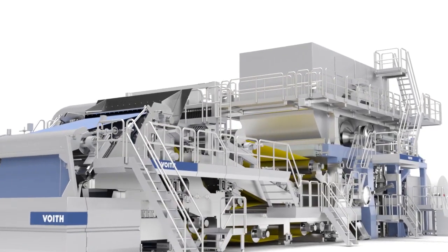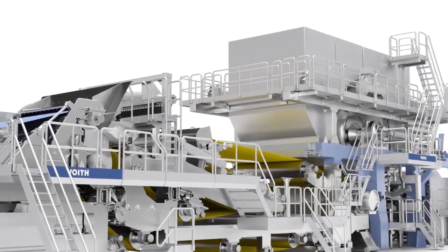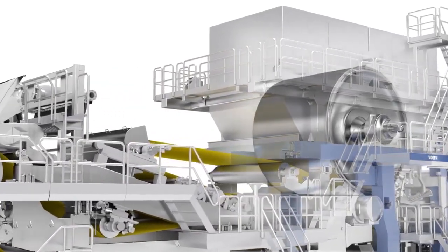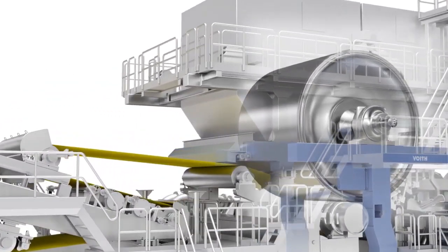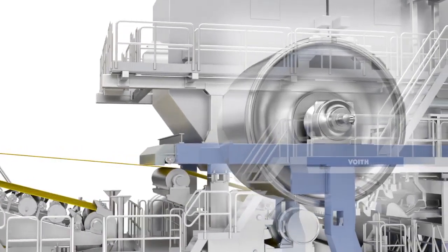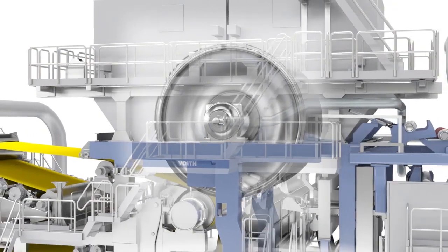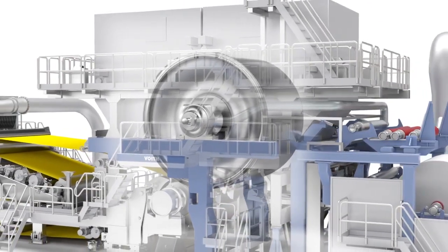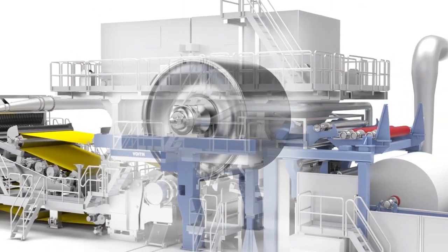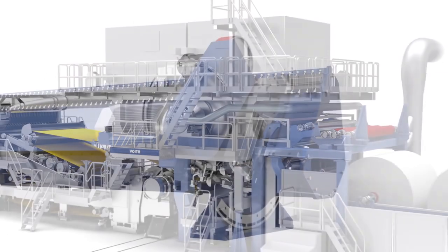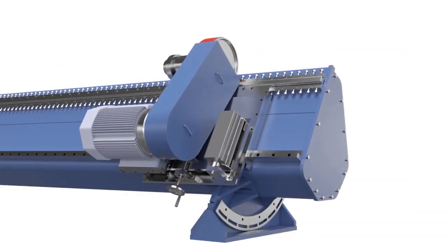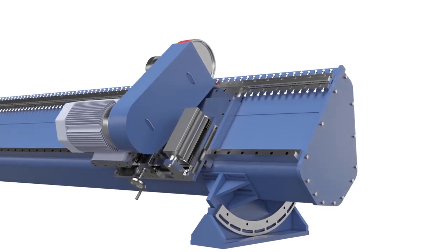Deformations on the Yankee surface can lead to tissue quality and production errors. To eliminate these irregularities, to improve the concentricity and restore the crowning, various grinding methods can be used. Voith Onsite Yankee Service has developed the Mini Grinder to achieve the highest grinding accuracy.